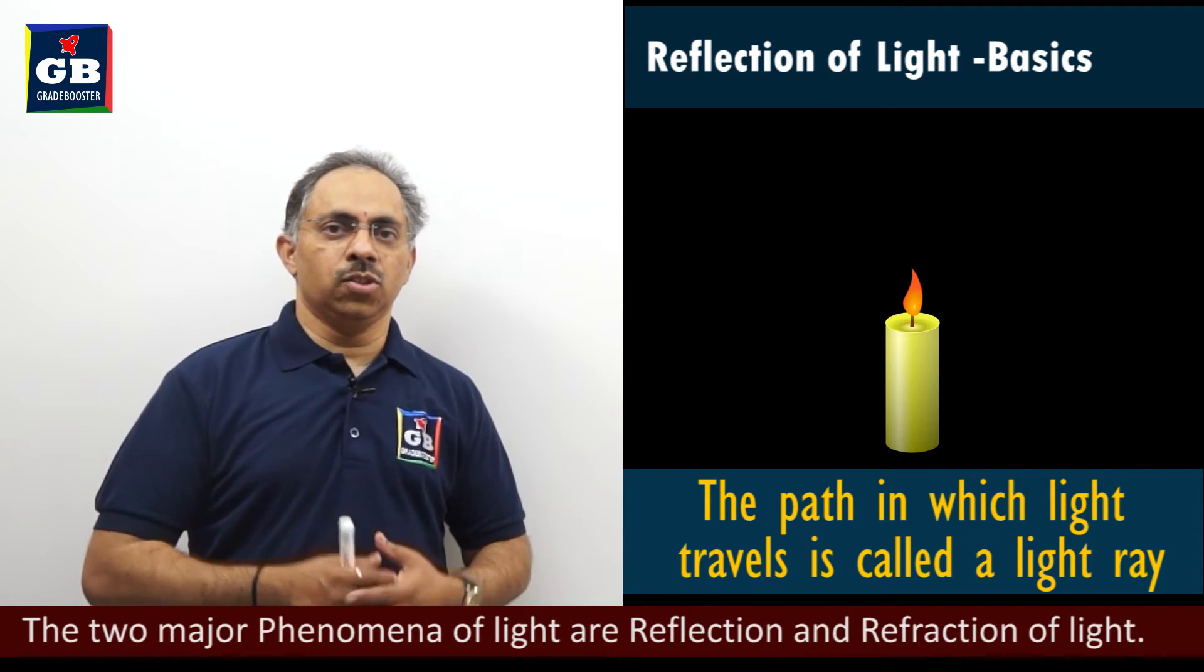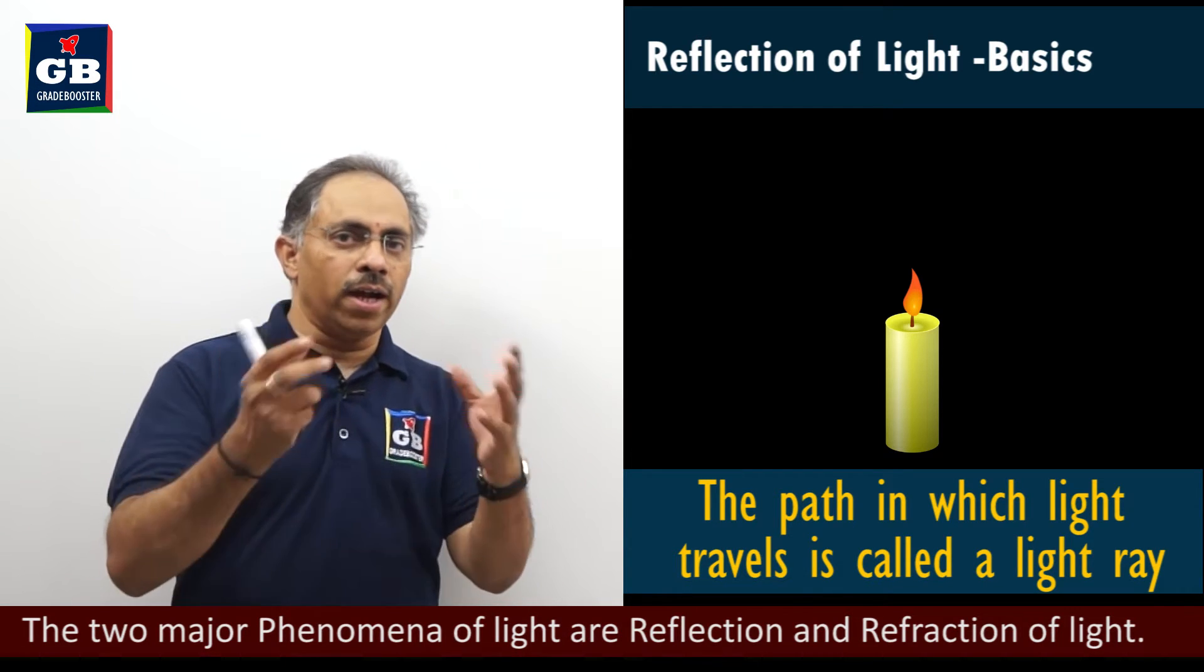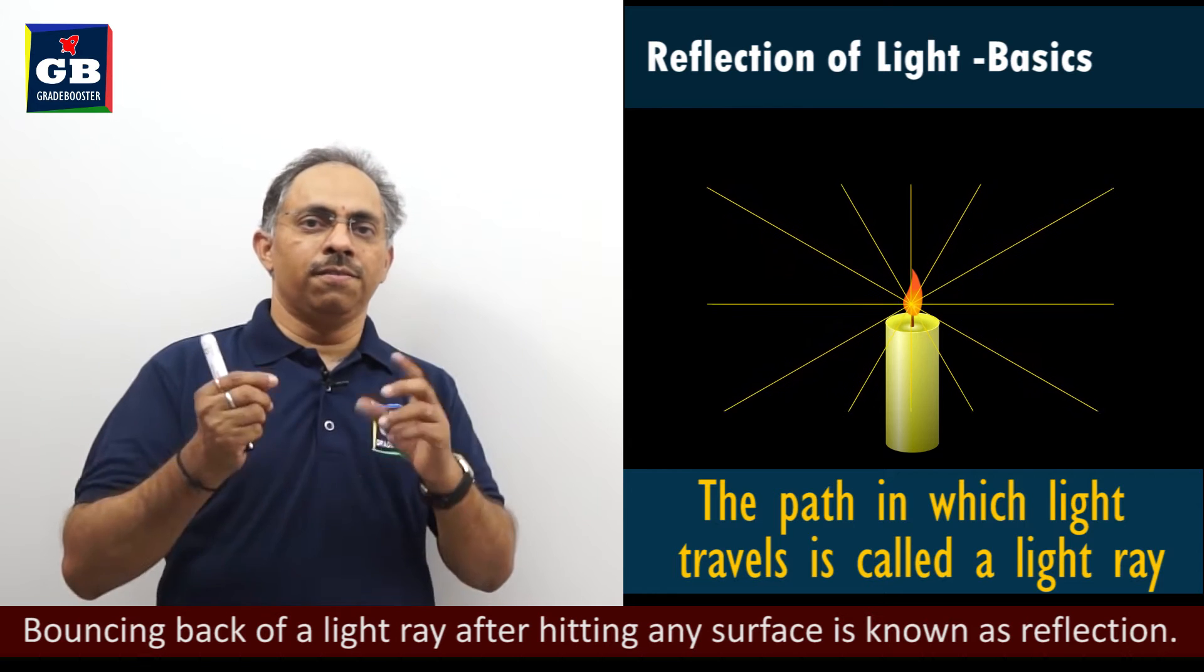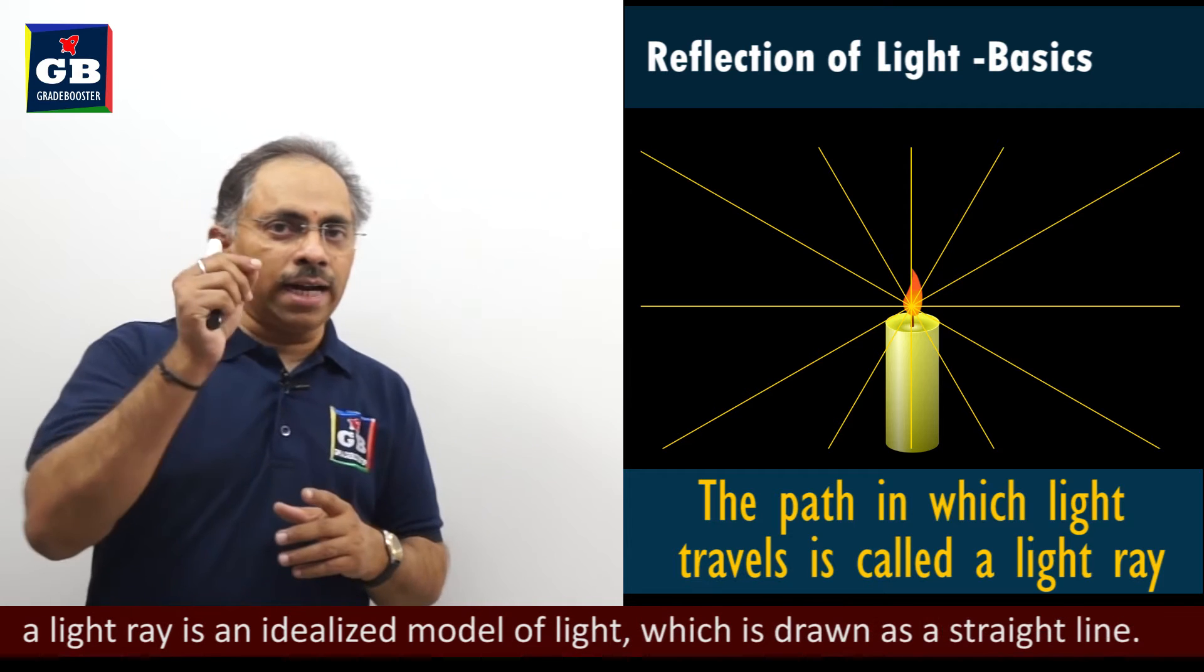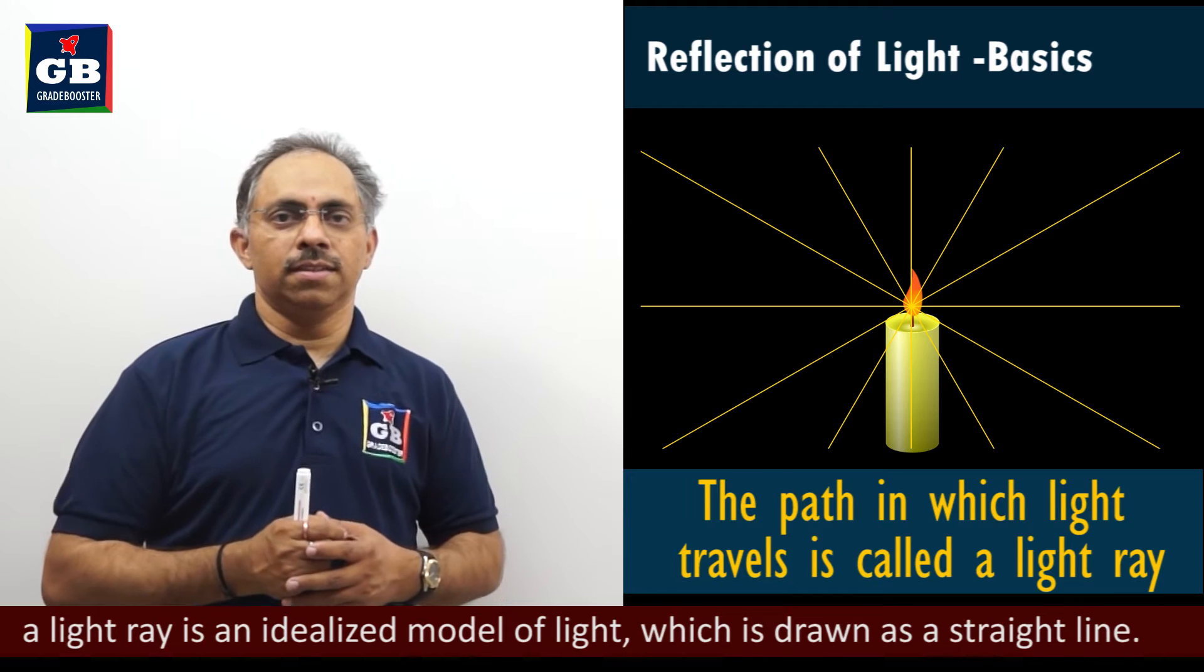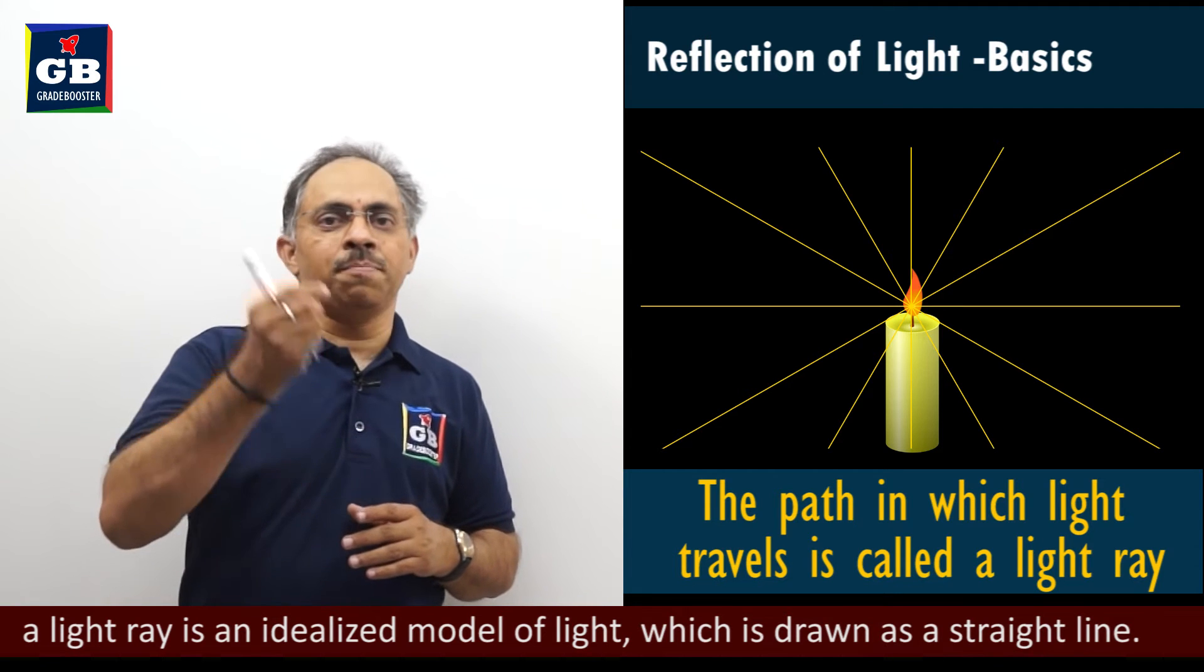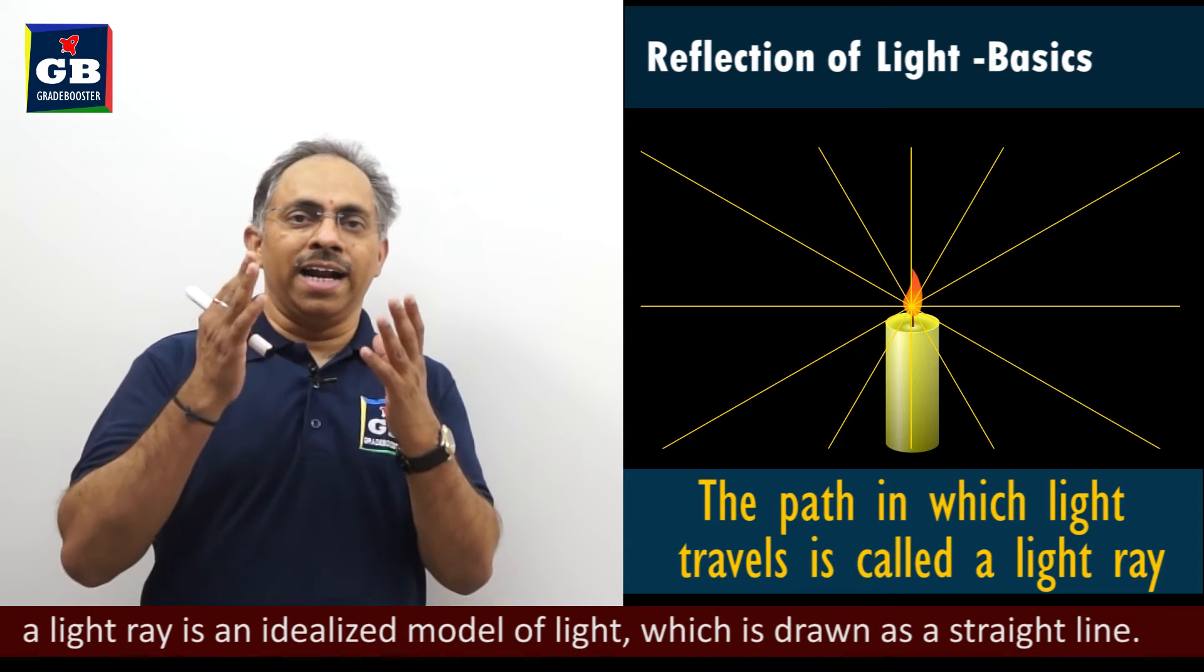So when we wanted to show that light is traveling in all directions, when we draw it, we will indicate with the help of small arrows pointing outward from the flame of the candle. So this way, this helps us that what are the light rays I am drawing? Each one is a straight line. These are light rays.